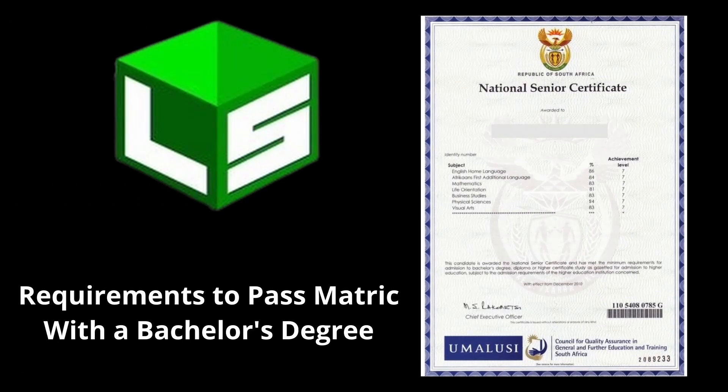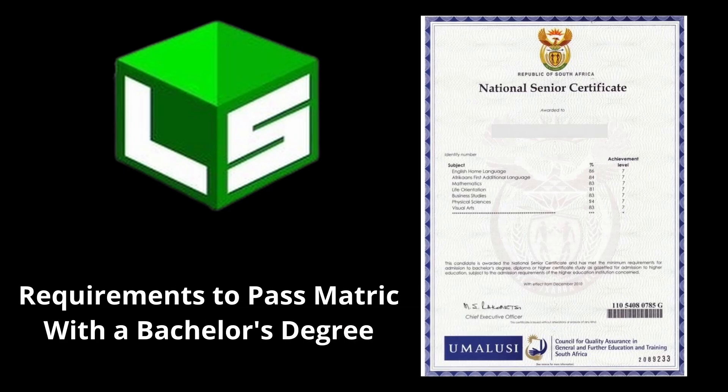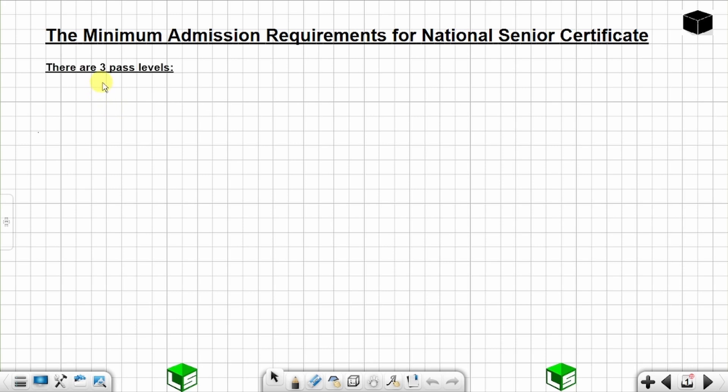Let's talk about the requirement for obtaining a bachelor degree pass in matric. Before we go into that, I want us to first talk about the national senior certificate itself. After that, we are going to talk about the requirement for obtaining a higher certificate, a diploma, and in the end, a bachelor degree pass. So there are three pass levels for a national senior certificate.